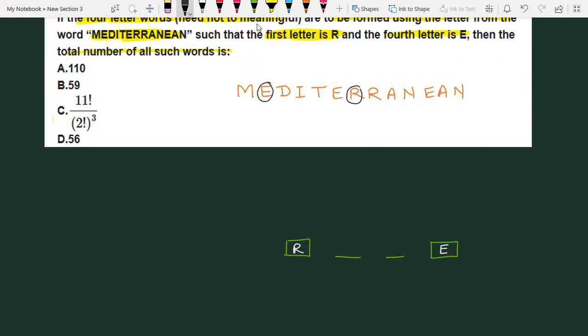The rest of the letters we need to select. You can see that there are two times E, two times A, two times N. Then there is M, D, I, T, R. So now we have these two places to fill.